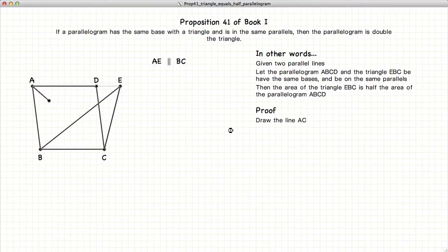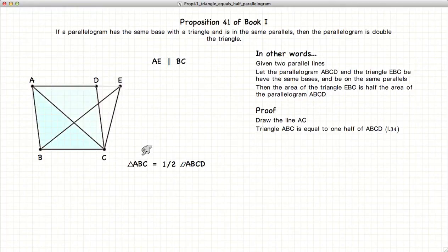So, let's begin. First, we draw a line from A to C, and we've created a triangle ABC, which is equal to one-half the original parallelogram of ABCD.